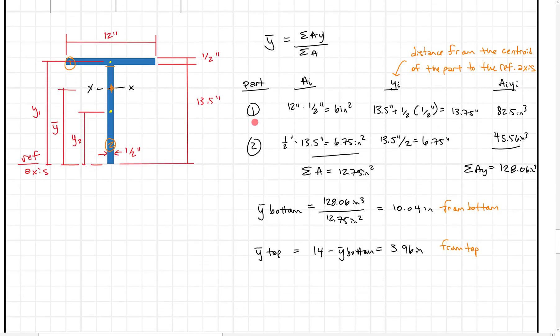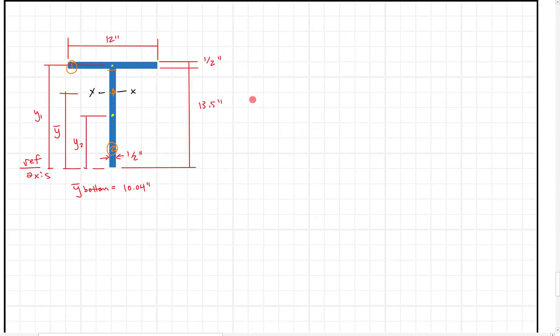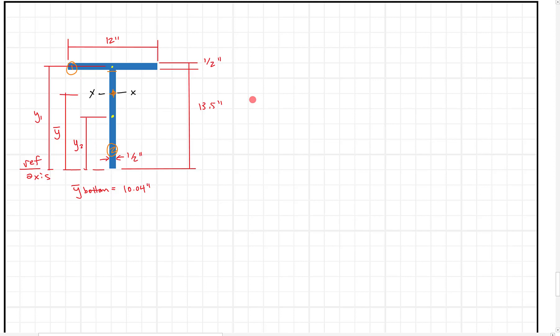And we're going to solve that using the parallel axis theorem. So let's just scroll down and see what we get. So when we did the Y bar, we found that Y bar was 10.04 inches from the bottom. So I'm just going to copy this figure down and we'll keep going. So what do we have? We want to solve this equation where we say IX equals the sum of I naught, the moment of inertia of the individual component, plus Ad squared.